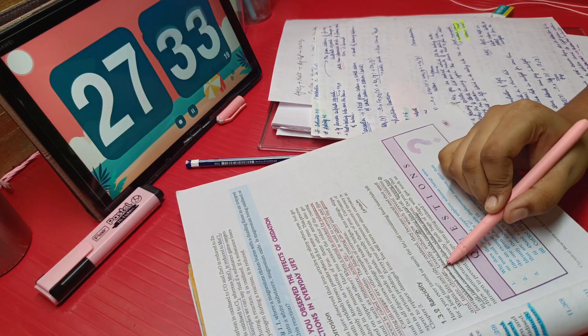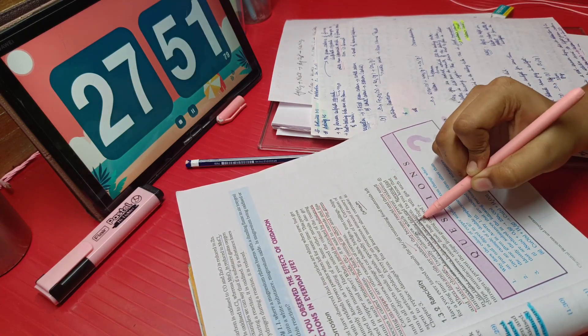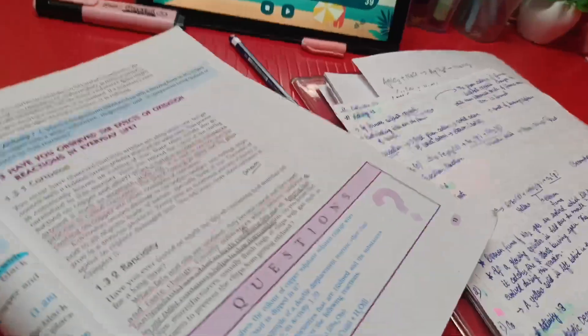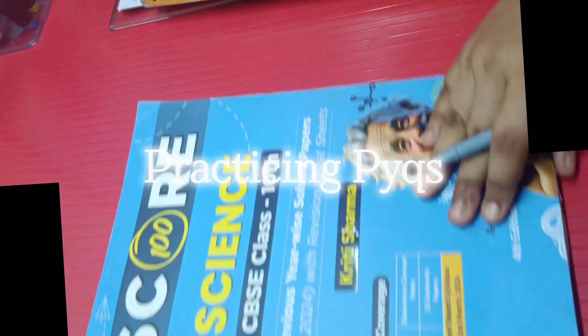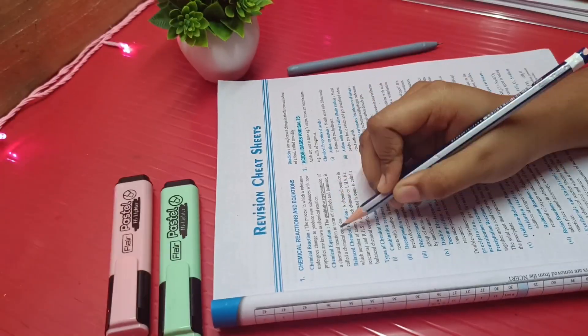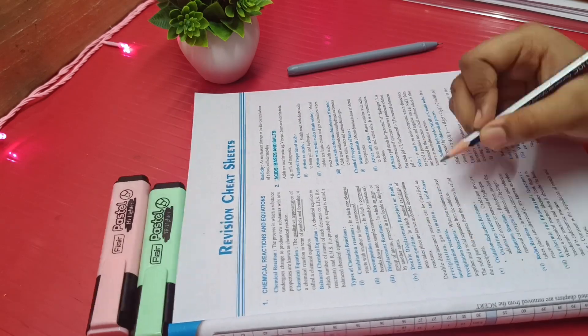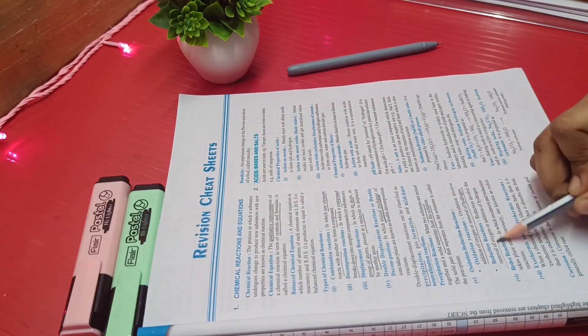After reading the NCERT and solving the in-text as well as the back exercises, we must solve PYQs because most of the questions are repeated from there. For this, we can refer to our score-hundredth book of one and only creativity. It also includes revision cheat sheets. And I was revising my entire chemistry portion from them.